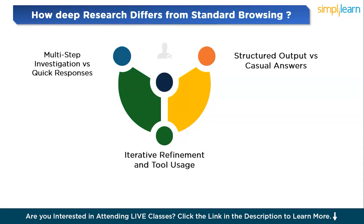If I talk about structured versus casual output, Deep Research focuses on delivering structured, organized outputs, whereas ChatGPT browsing tends to offer more casual and unstructured responses.